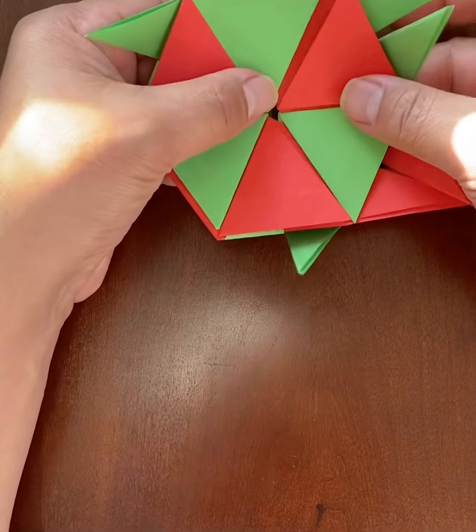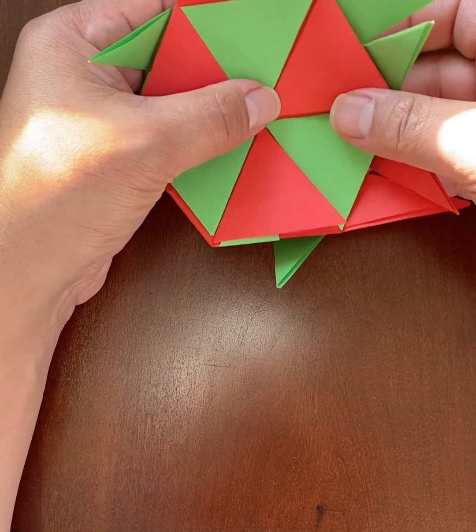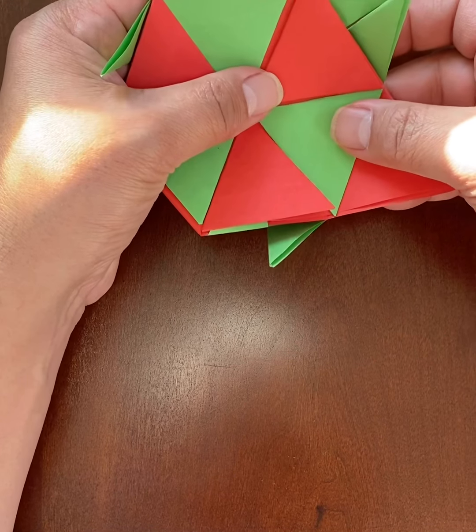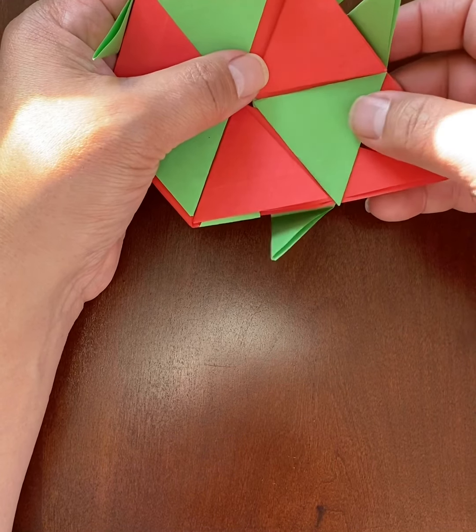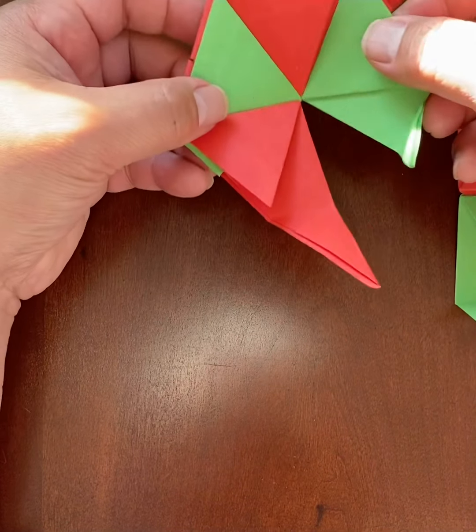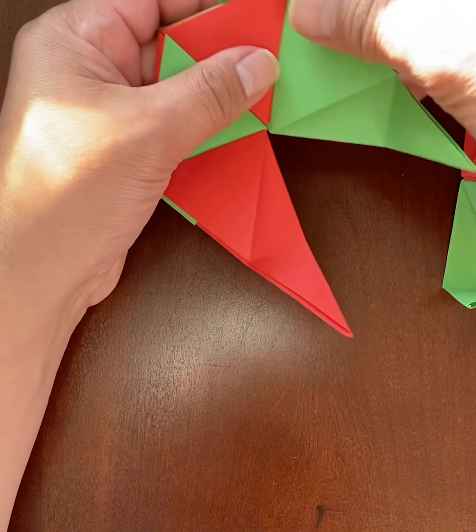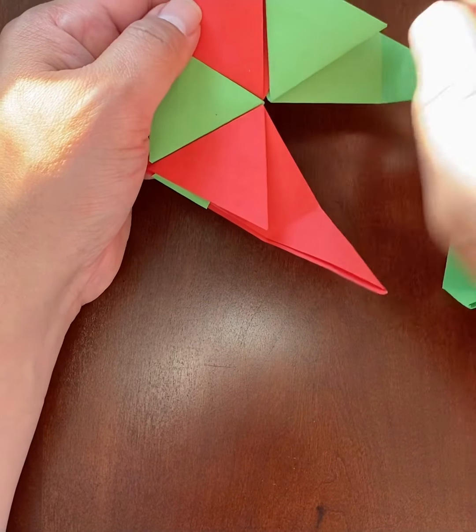Now, if you want to make a flower, you can have fewer modules. And when you close them up, so here I'm only using one, two, three, four modules.